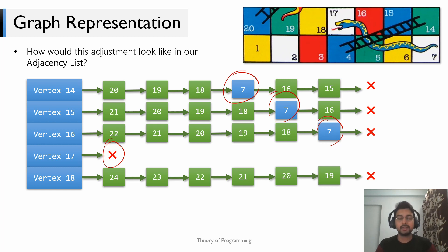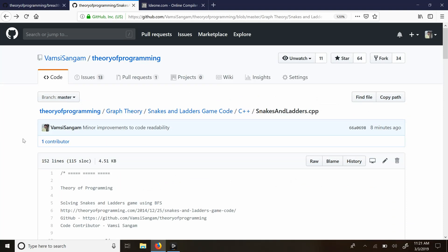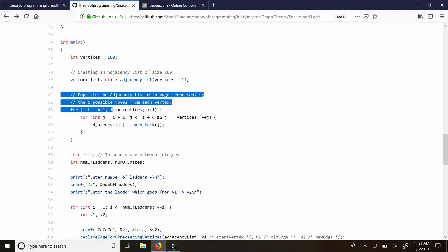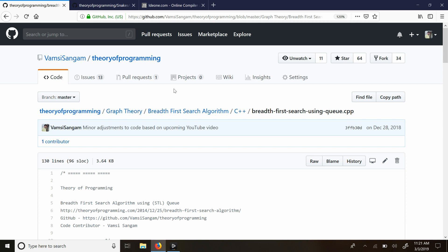So now after building the modified graph, we simply apply BFS on it. This gives us the shortest path from vertex 1 to vertex 100. Normally I'd show pseudo code but in this case it's better to jump directly into the code — and trust me, it is very simple. I have the code for the snakes and ladders demo open here. All my codes are available on my GitHub; I'll leave a link in the description. This code is just a modification of my BFS code, for which I'll also leave a link in the description.